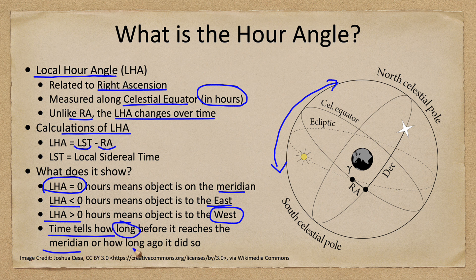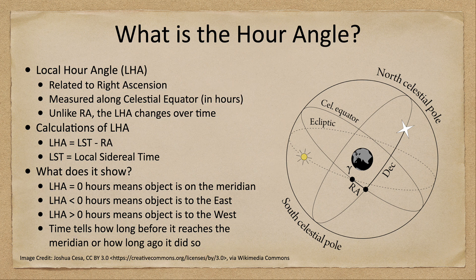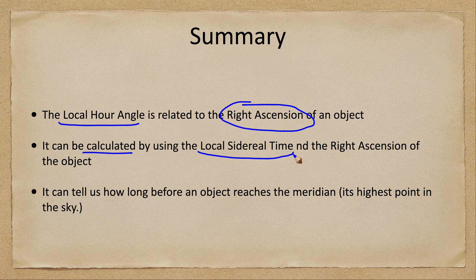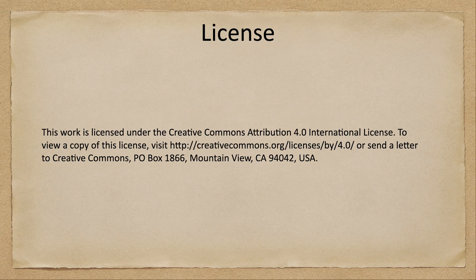Let's finish up with our summary. What we've looked at today: first, the local hour angle is related to the right ascension of an object; we can calculate it using the local sidereal or star time and the right ascension; and it can tell us how long before the object reaches the meridian, which will be its highest point in the sky. That concludes this discussion on the hour angle. We'll be back again next week for another discussion on a topic of the celestial sphere. Until then, have a great day everyone, and I will see you in class.